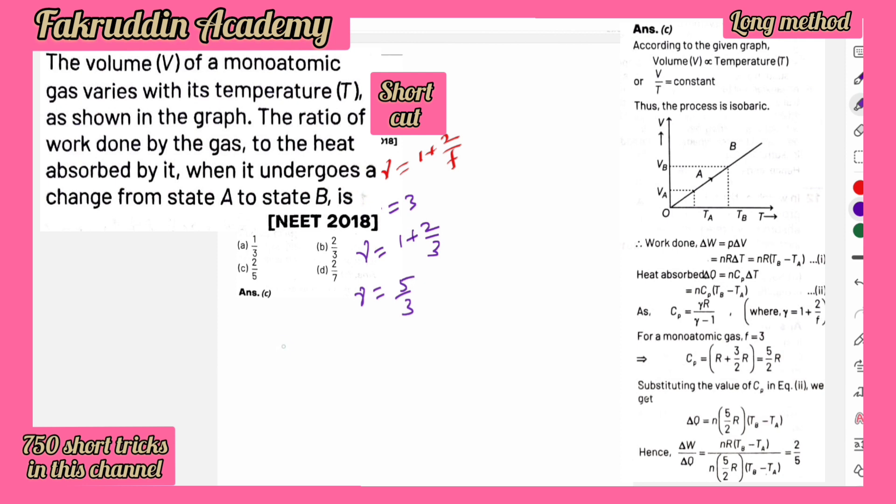But it is asking us to find out the ratio. What is the ratio here? Ratio of work done to that of heat absorbed. You know work done can be taken as R dT and dQ can be taken as Cp dT. So dT dT gets cancelled, but you can also write Cp as gamma R by gamma minus 1.